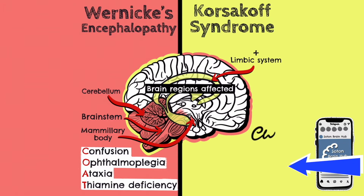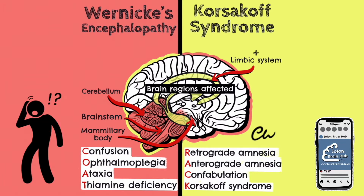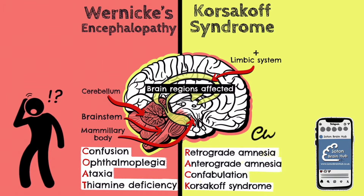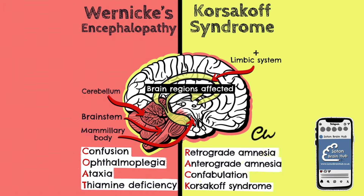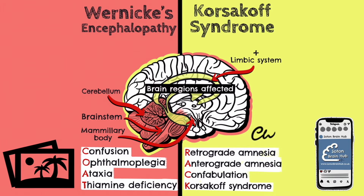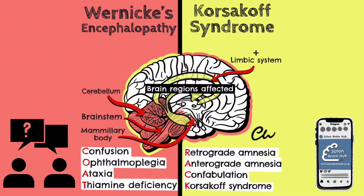To remember the symptoms of Korsakoff syndrome, use the mnemonic RAC. Firstly, we have retrograde amnesia — a form of amnesia where someone is unable to recall events that occurred before the development of the amnesia. Secondly, there is anterograde amnesia, which is a decreased ability to retain new information. Thirdly, we have confabulation — a type of memory error in which gaps in a person's memory are unconsciously filled with fabricated, misinterpreted, or distorted information.